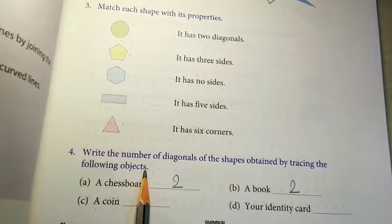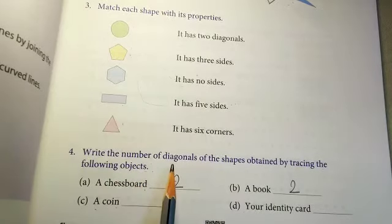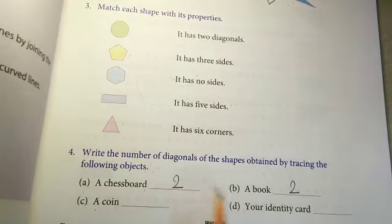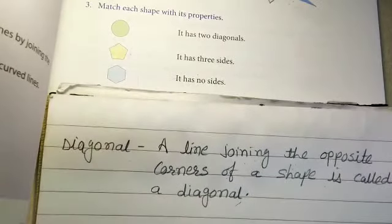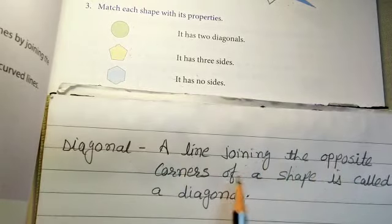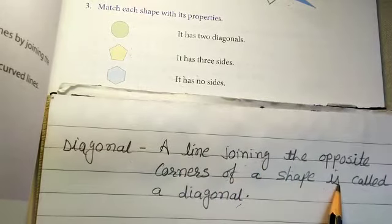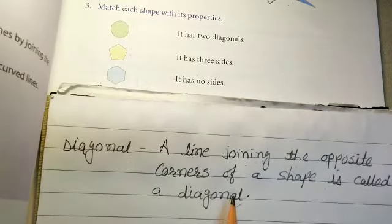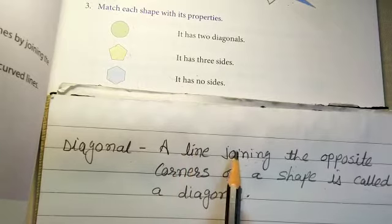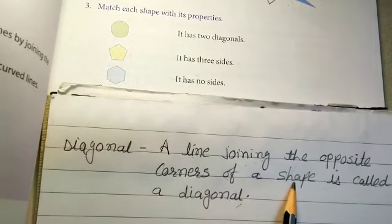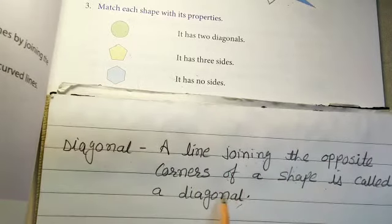Here in our mind one question will raise what is called diagonal. So let me remind you a definition of diagonal which is a line joining the opposite corners of a shape is called a diagonal.